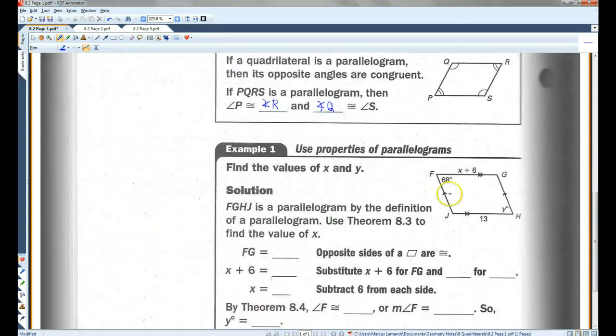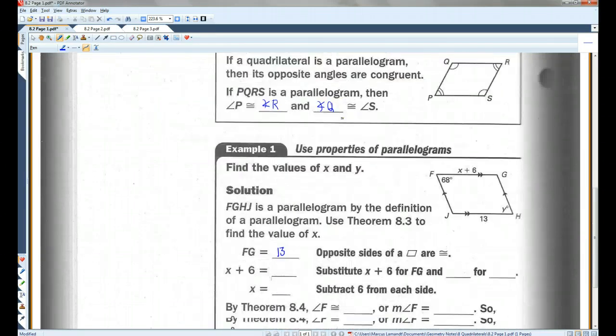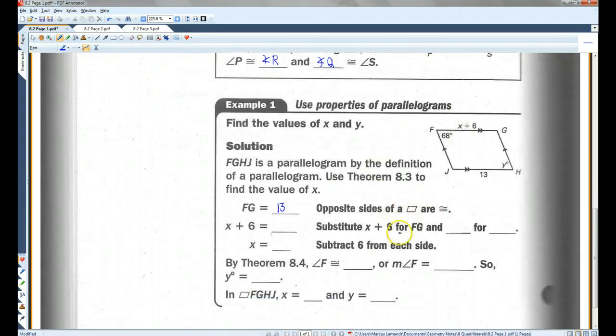All right, let's do an example. Find the values of X and Y. FGHJ is a parallelogram because we have opposite sides parallel. So, we know that FG, that's the top, has to equal 13 because the opposite sides of a parallelogram are congruent. This is another symbol that means parallelogram. Anytime you see a little slanted box, that means parallelogram. I tend to use this instead when I'm doing notes, but if you're ever doing book work or if you're looking through a textbook, this is another common abbreviation for a parallelogram.